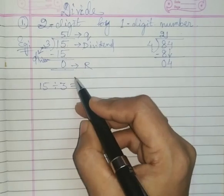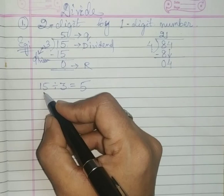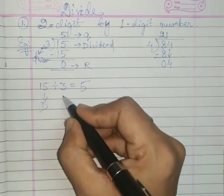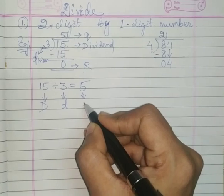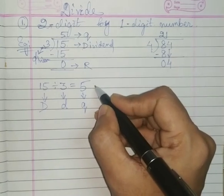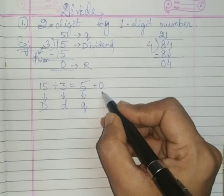So 15 divided by 3 is equal to 5. 15 is the dividend, 3 is the divisor, 5 is the quotient. There is no remainder, or it's 0.